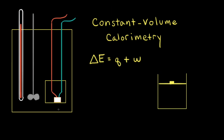Now that we understand how a bomb calorimeter works, let's think about the heat that's being transferred from the combustion reaction to the water — that heat is q. Let's go back to the first law of thermodynamics, which says that the change in the internal energy of the system is equal to q plus w, where q is the heat transferred and w is the work done.